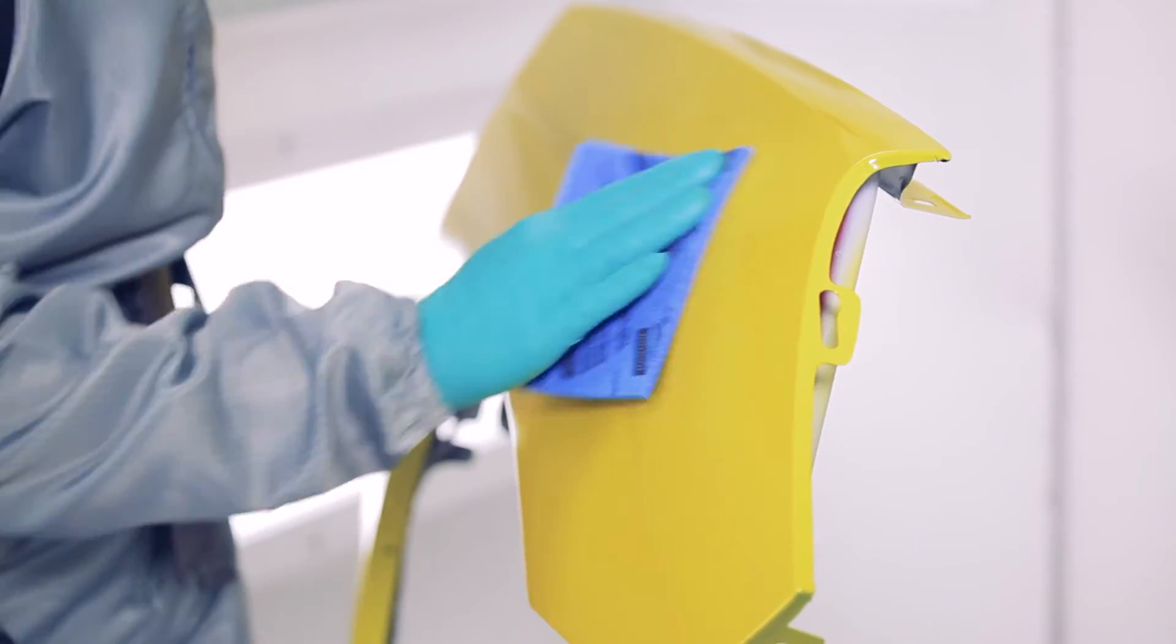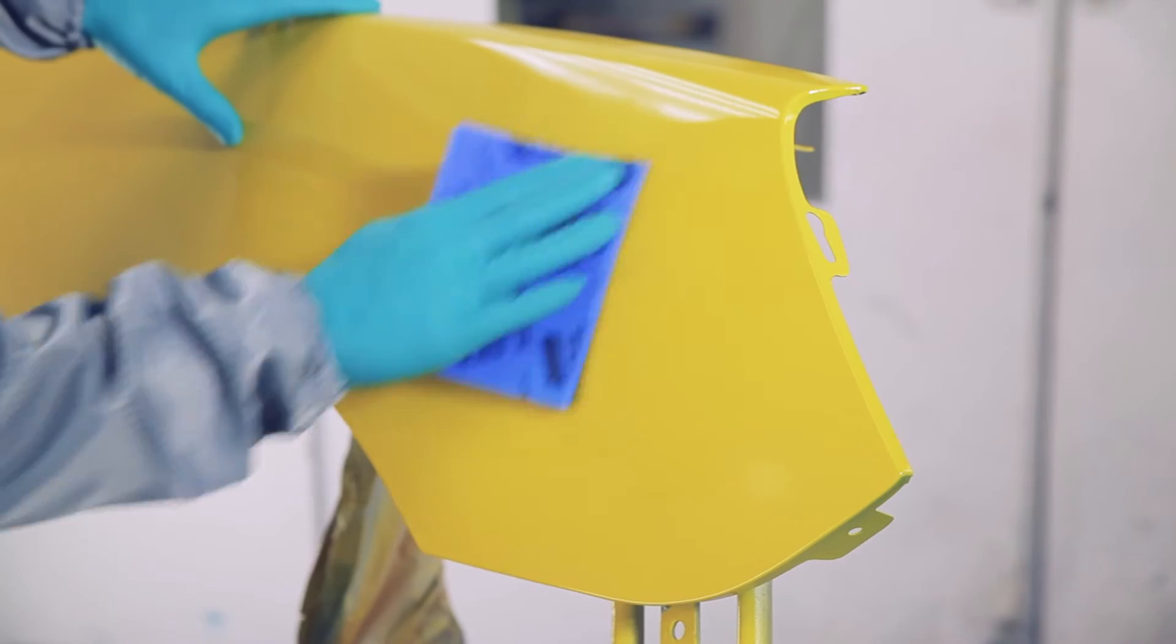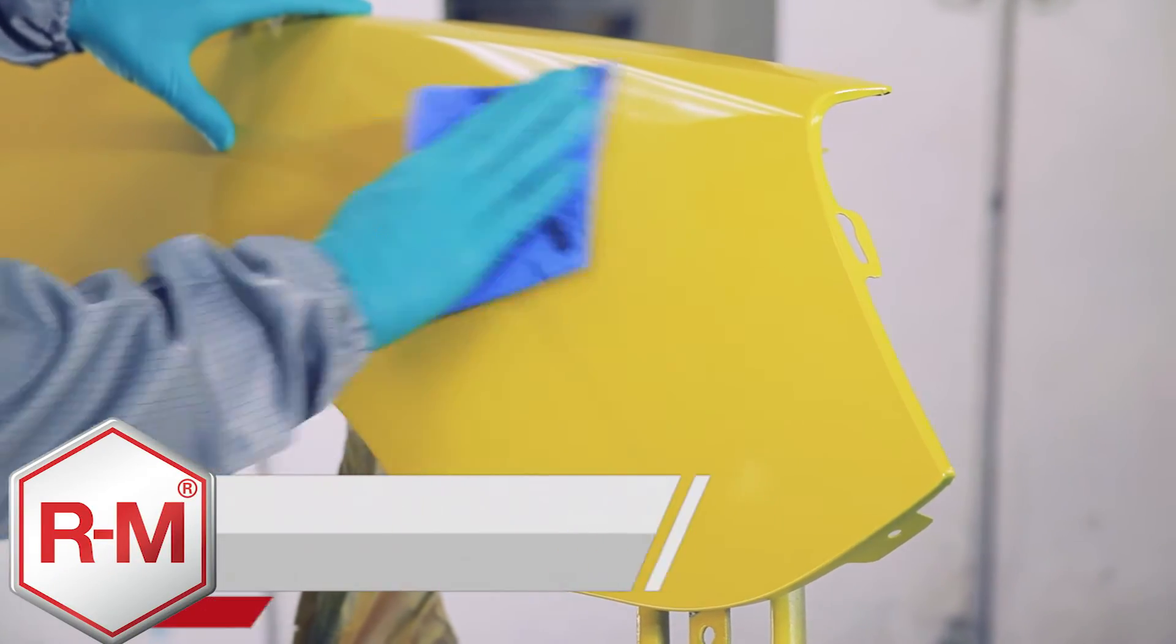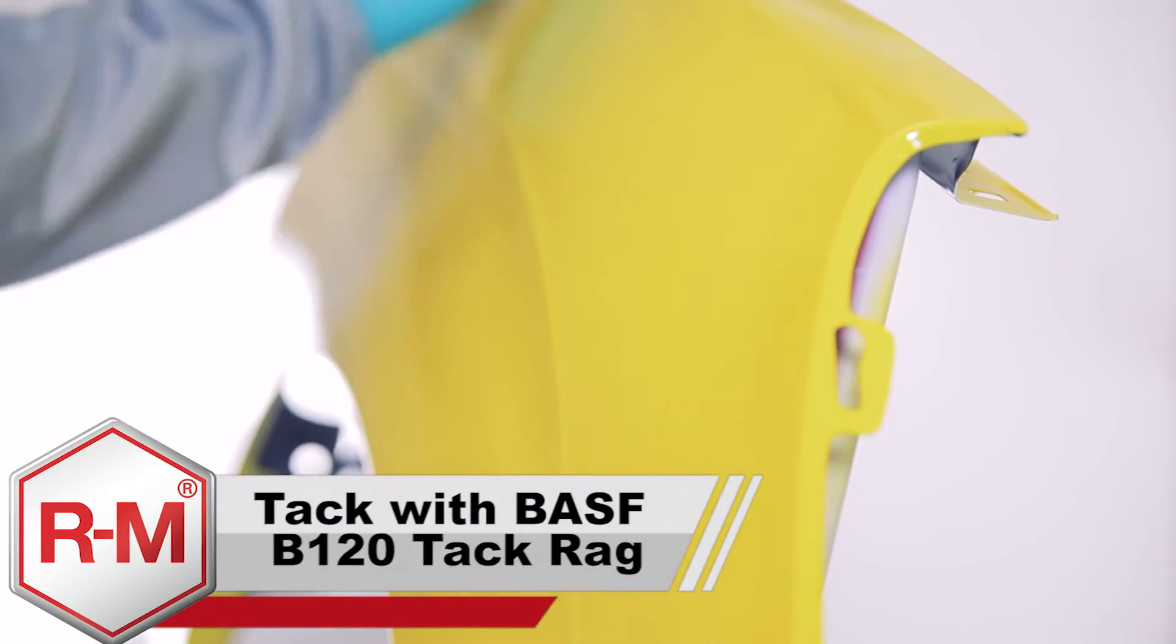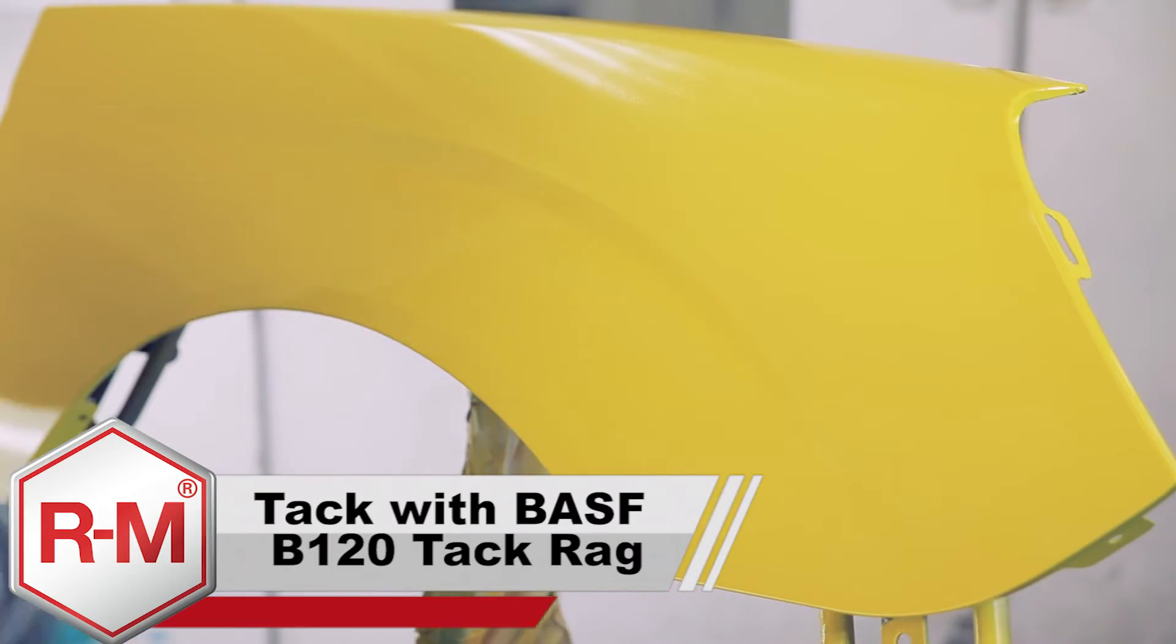Correct the panel imperfection using a flexible sanding pad with a grit of P800 to P1000 and tack the entire panel using a BASF B120 tack rag.